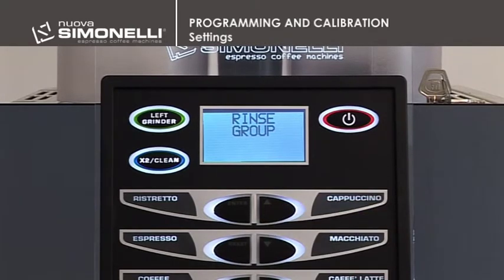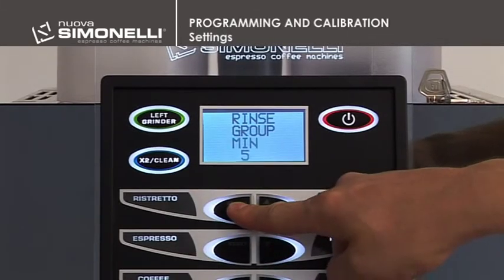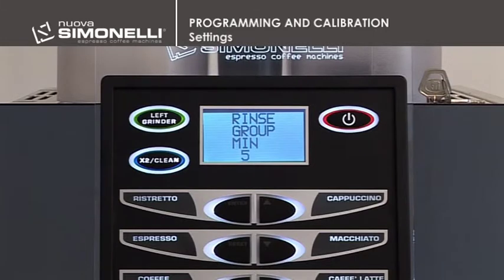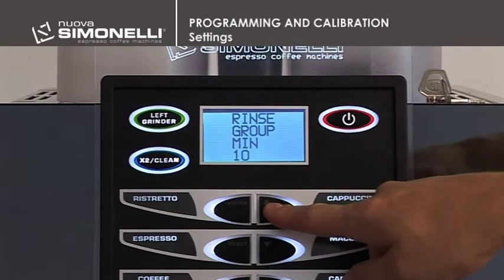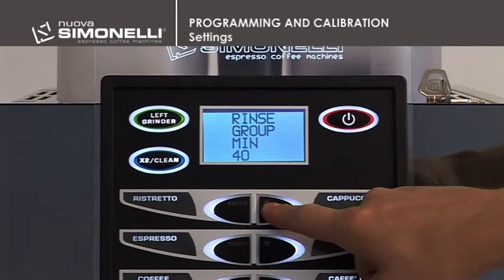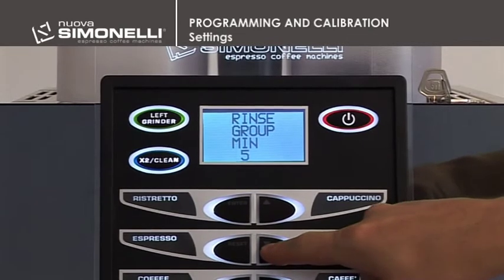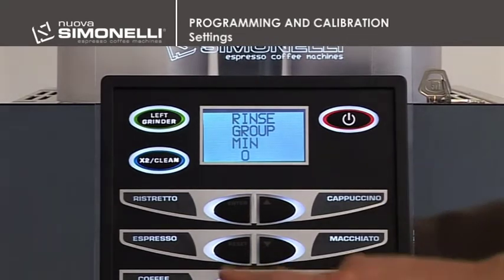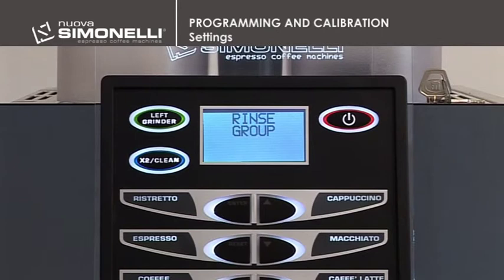Group Rinse. It's possible to program the standby time after which the machine will carry out a group rinse cycle using just water to keep the coffee circuit clean and also hot. Press Enter to open the submenu. Use the up-down arrow keys to select Off, 5, 10, 20, or 40 minutes. Press Enter to confirm the setting, then press Reset to quit the submenu.